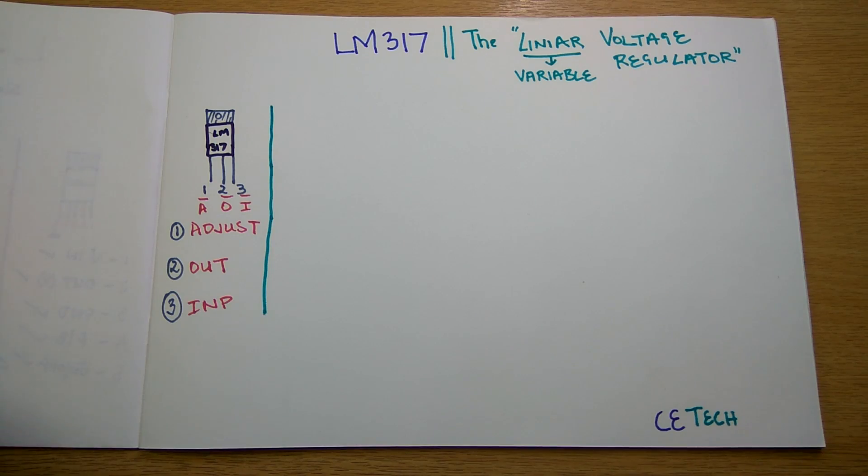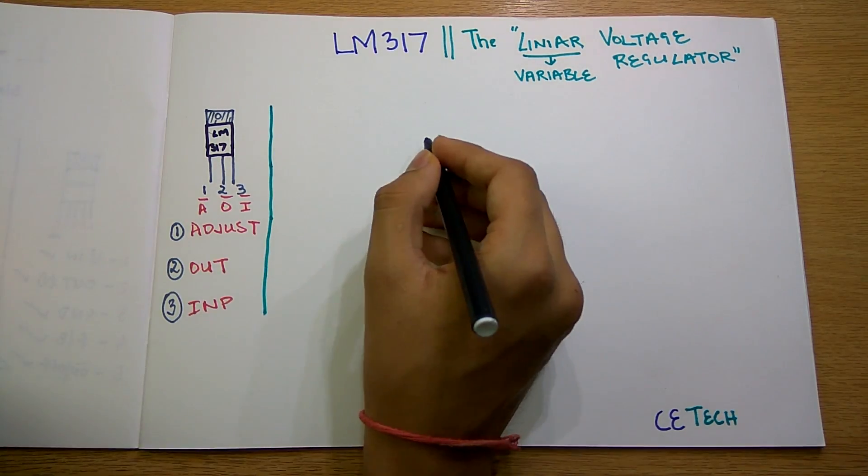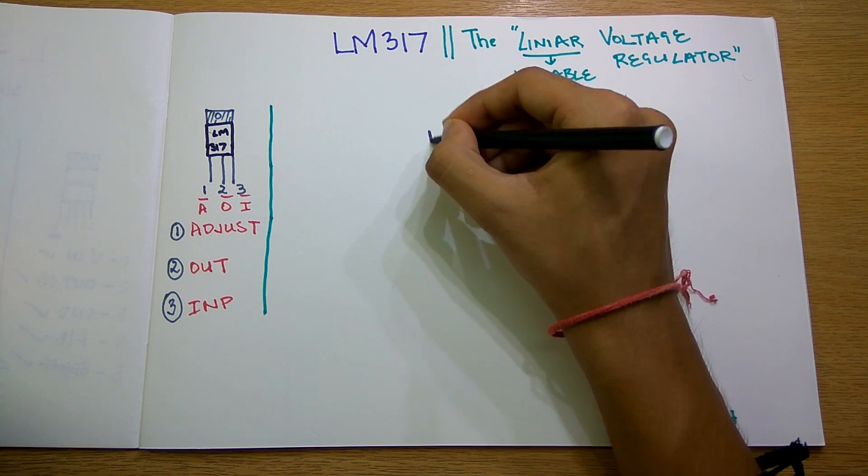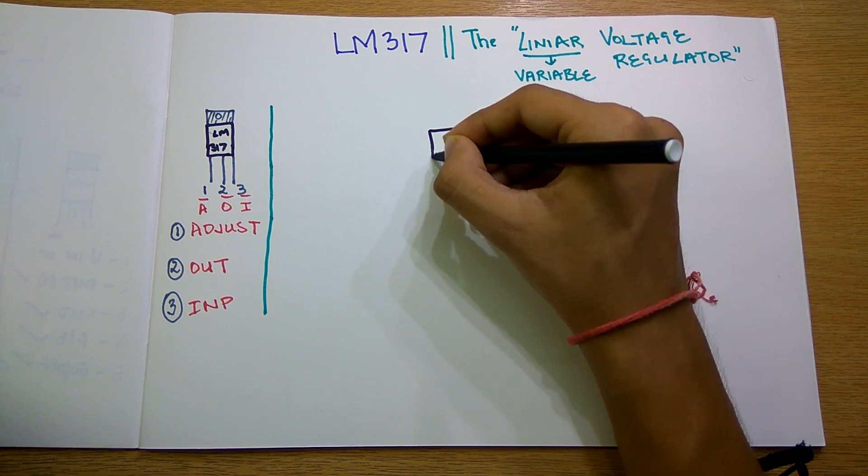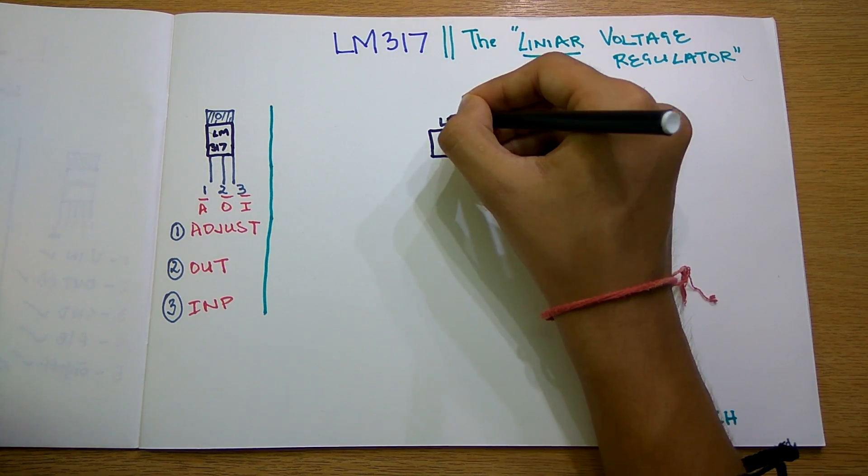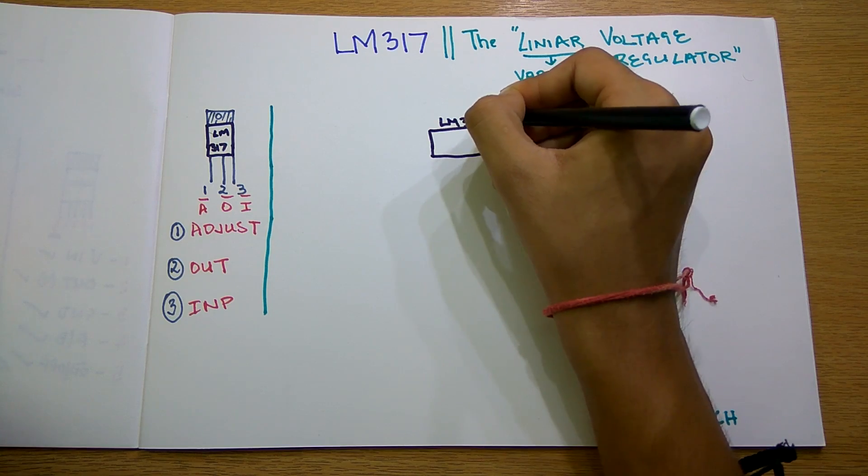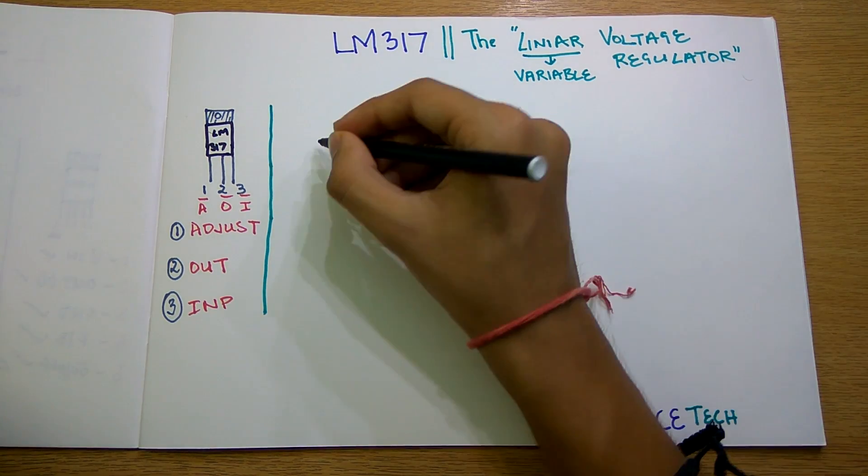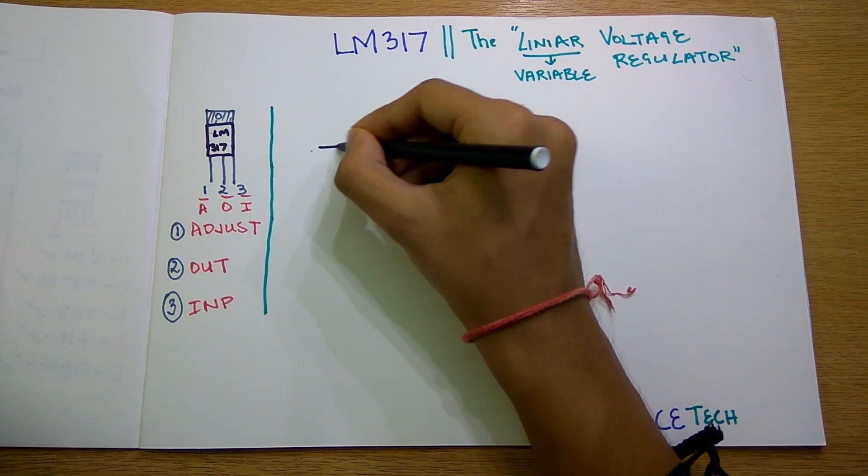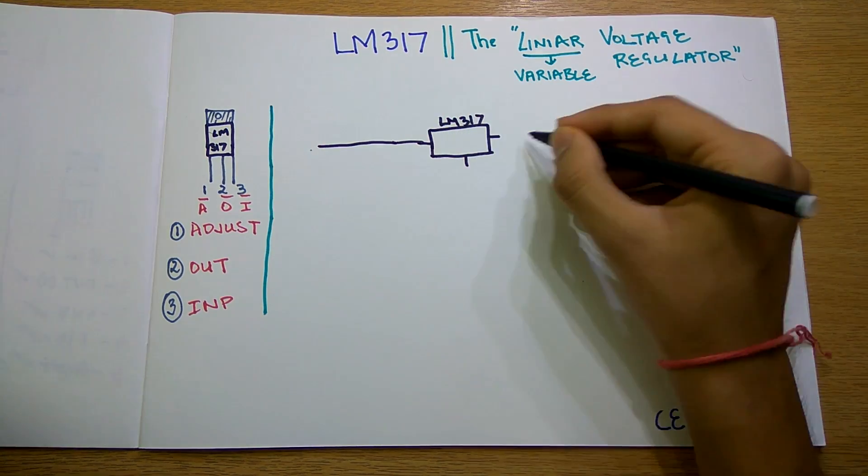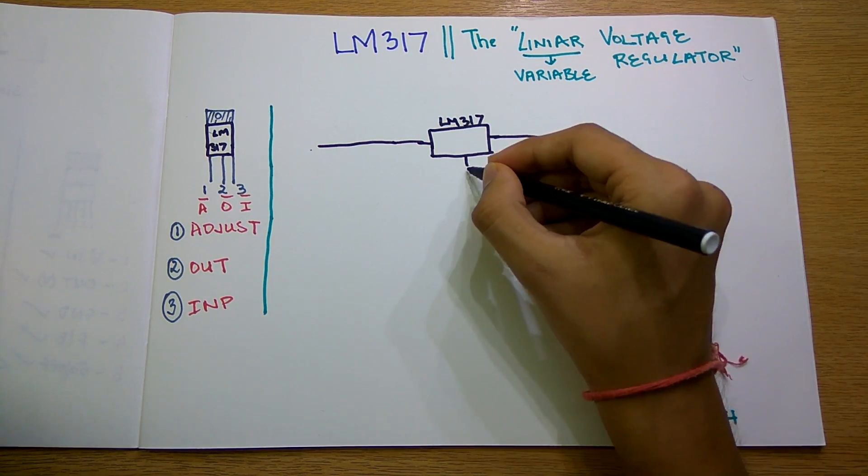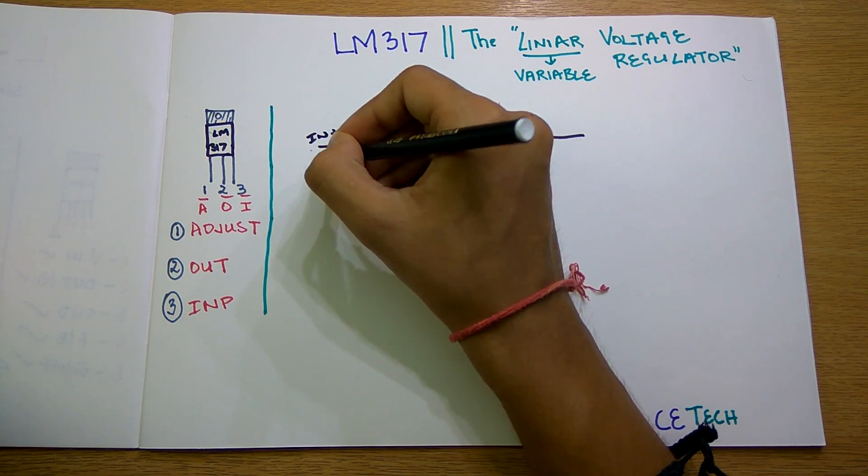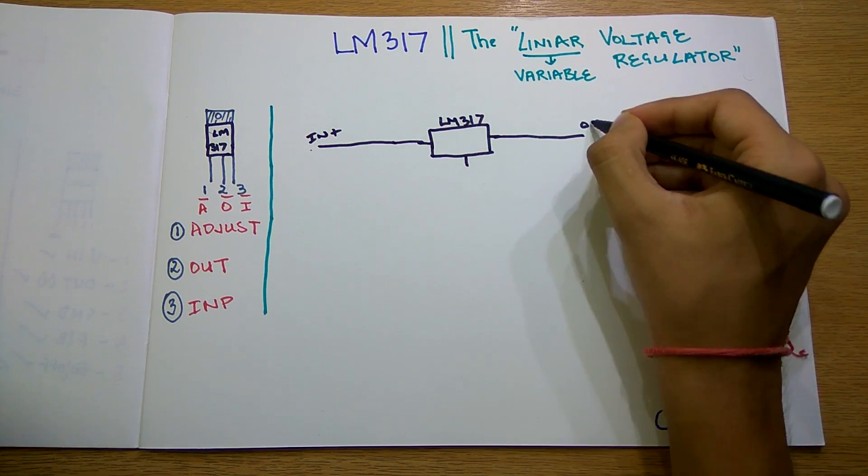Let's see how we can apply this thing in a circuit diagram. We'll see a type of block diagram. This is the LM317 block. We have three pins over here. This is probably the input line and this is probably the output line.